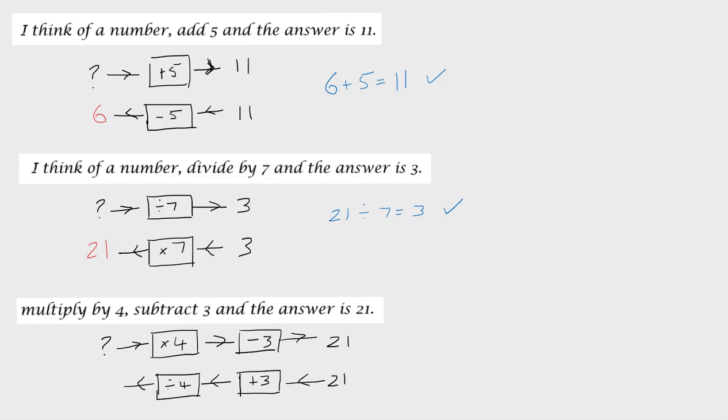So let's work through that. 21 plus 3 gives us 24. 24 divided by 4 gives us 6.